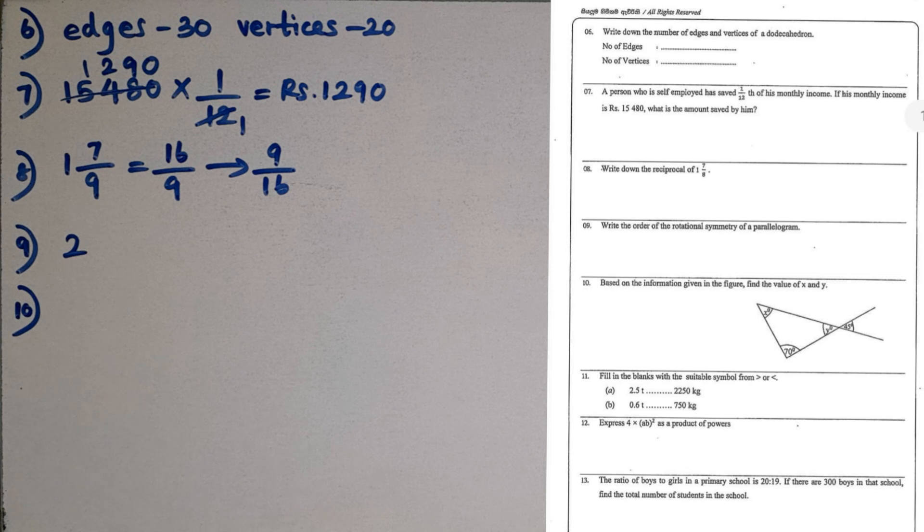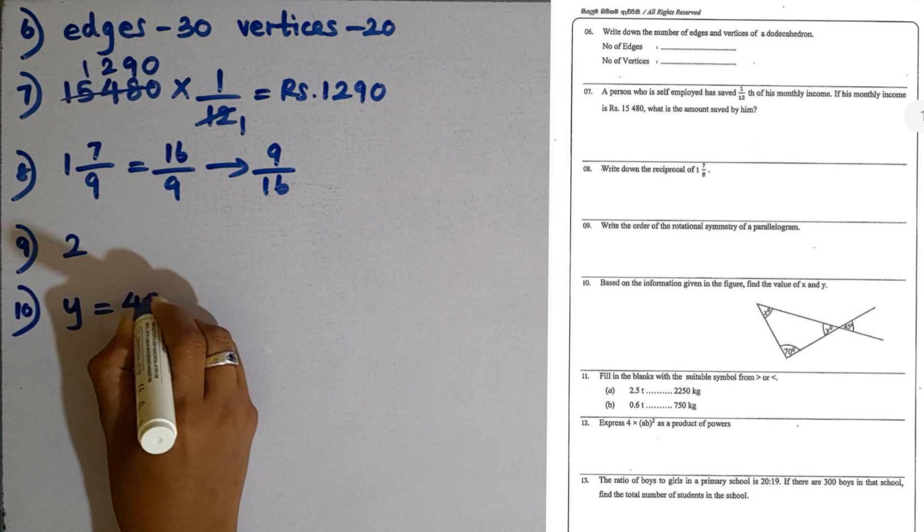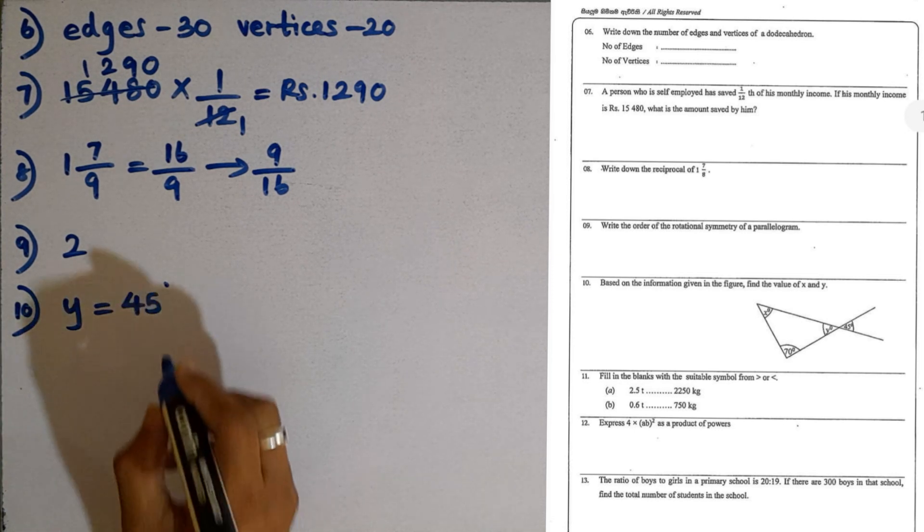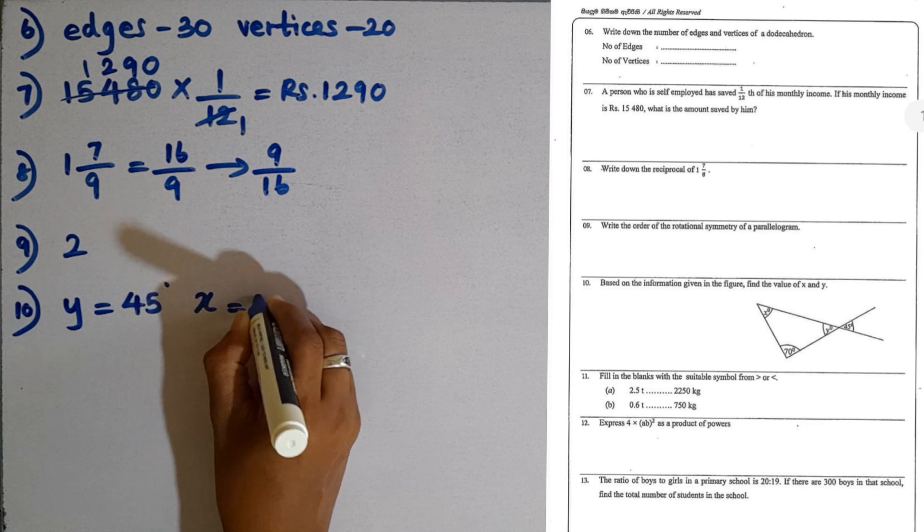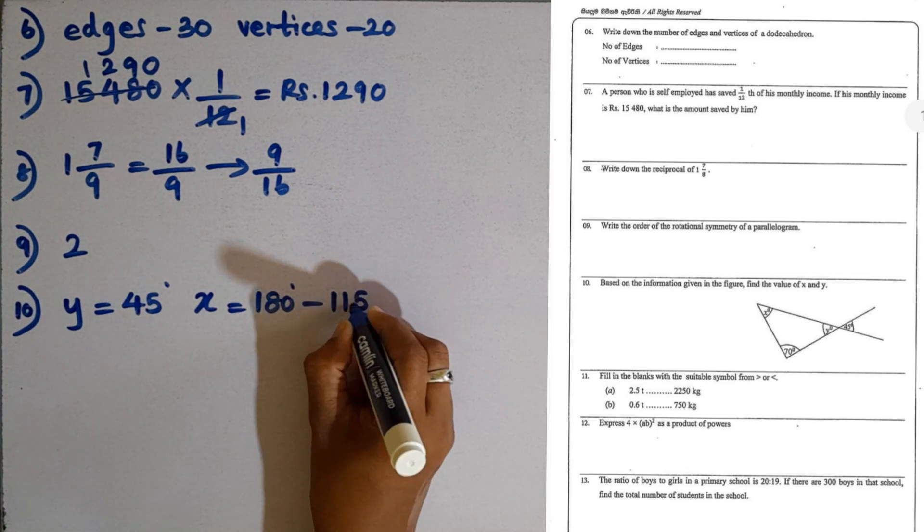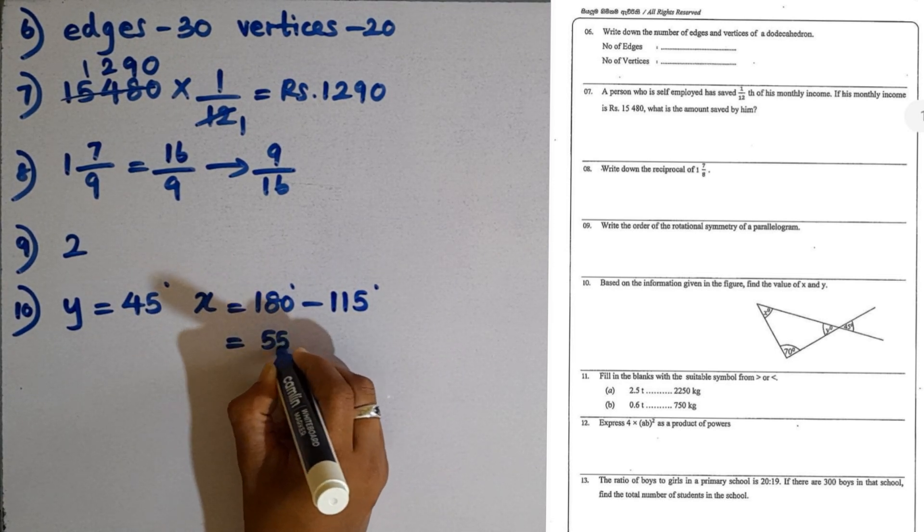Question number 10. Based on the information given in the figure, find the value of x and y. y is equal to 45 degrees as they are vertically opposite angles. We can find x by taking the sum of the interior angles of a triangle. x plus y plus 70 is 180 degrees. So x is equal to 180 minus 70 plus 45, which is 115. The subtraction gives 55 degrees.